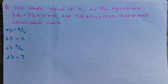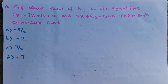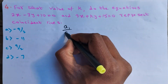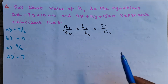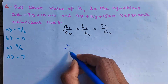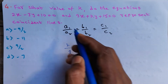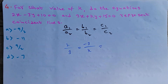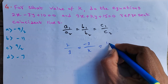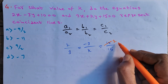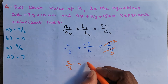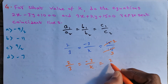Question 4: For what value of k do the equations 2x − 3y + 10 = 0 and 3x + ky + 15 = 0 represent coincident lines? The condition for coincident lines is a1/a2 = b1/b2 = c1/c2. So: 2/3 = −3/k = 10/15. And 10/15 simplifies to 2/3. So 2/3 = −3/k = 2/3.